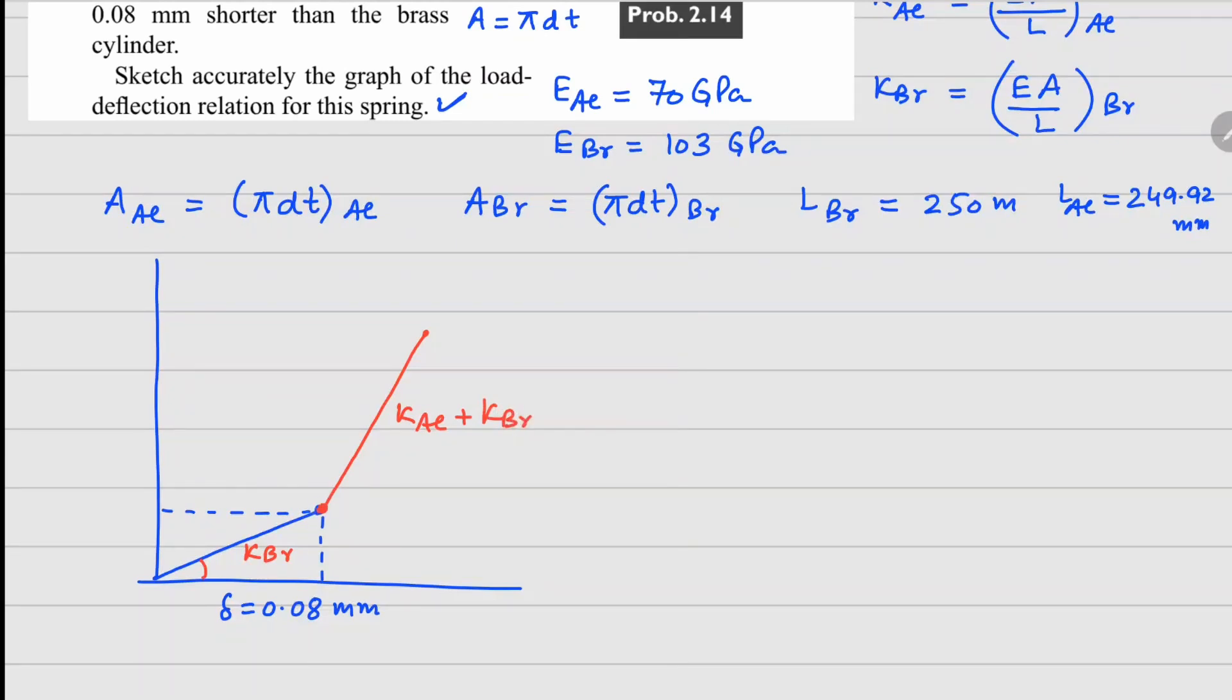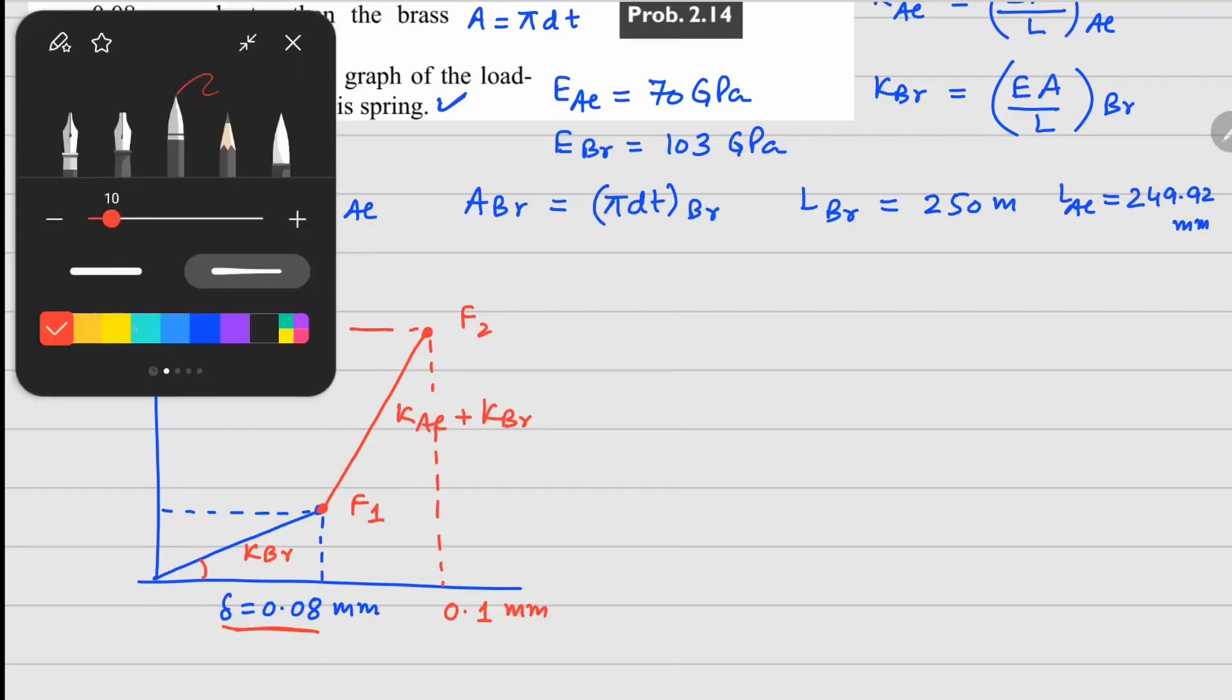So to complete this plot I can figure out the value of force here F1, value of force F2 right there. Now this value we know already that we are doing this at delta 0.08, maybe this also we can do it up to 0.1 millimeter and complete this one.